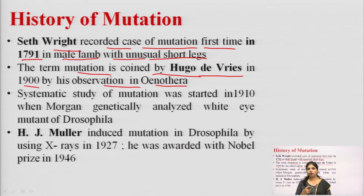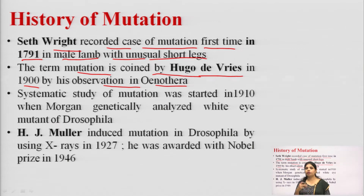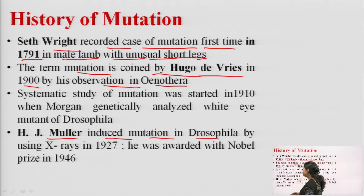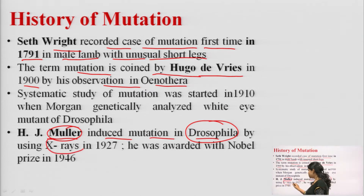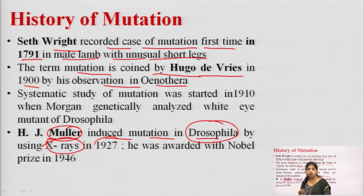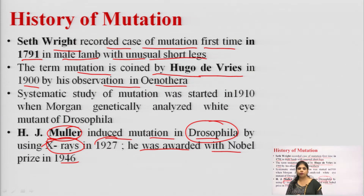The systematic study of mutation was started in 1910 when Morgan genetically analyzed the white-eye mutant of Drosophila. He observed changes in the eyes of Drosophila — the eyes were white — and from that the systematic study of mutation began. H.J. Muller induced mutation in Drosophila in 1927 and was awarded the Nobel Prize in 1946.